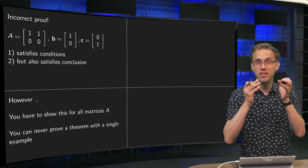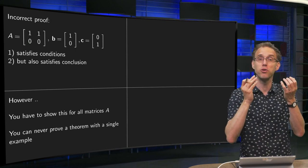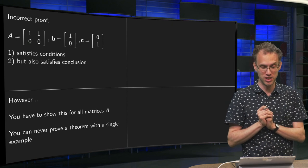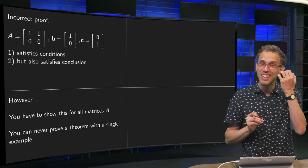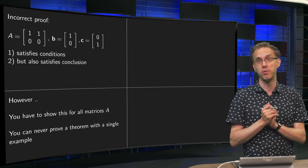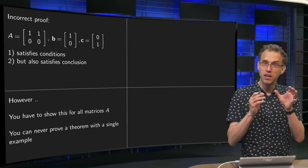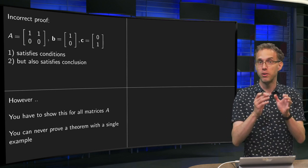However, you have to show that if the theorem holds in your opinion, you have to show that this holds for all matrices A. So you can never prove that the theorem is true giving a single example that happens to satisfy a theorem. So trying to prove the theorem like this is also incorrect.